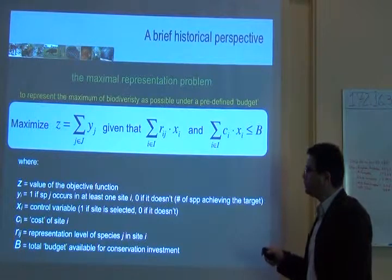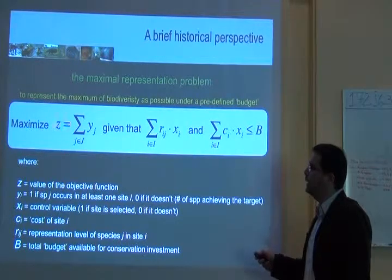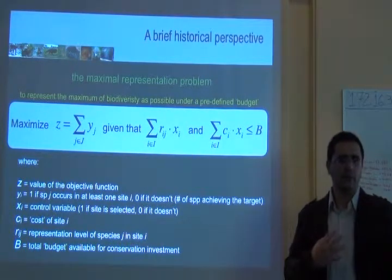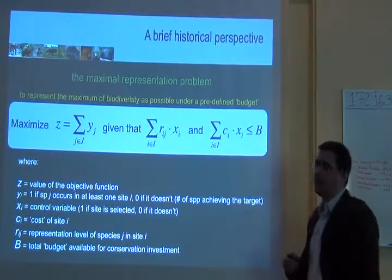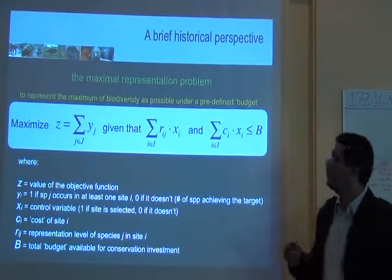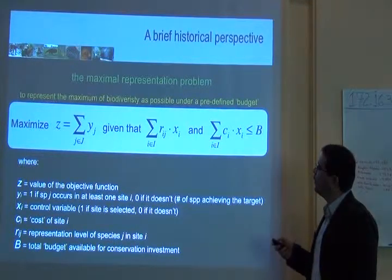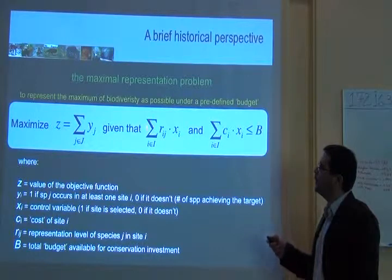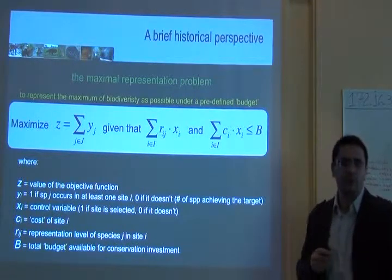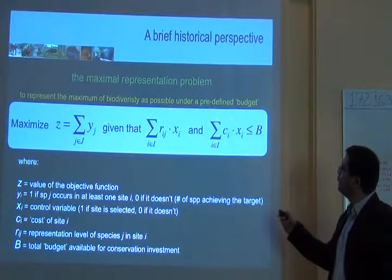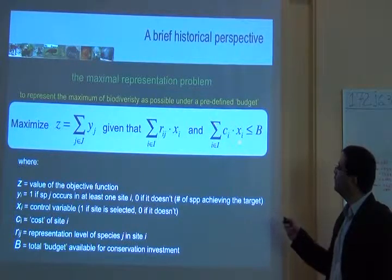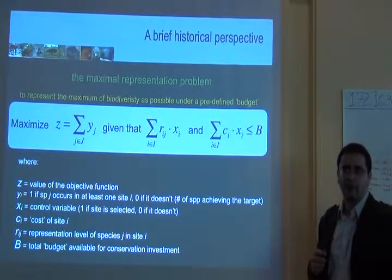You have again your objective function that translates the objective you have: represent the maximum biodiversity as possible under a predefined target. You have of course to achieve the target you predetermined for that species, and the total cost of the areas you are selecting should not be higher than the budget you have.